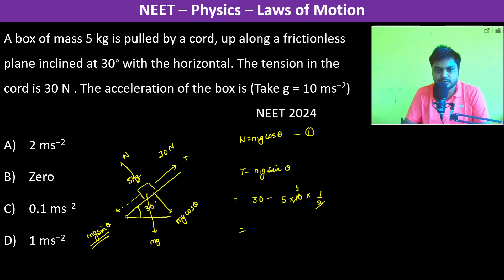So this is 30 minus 25, which is 5 Newtons.